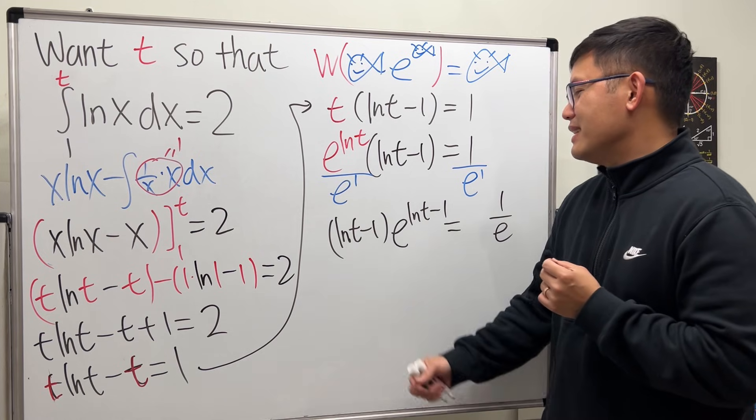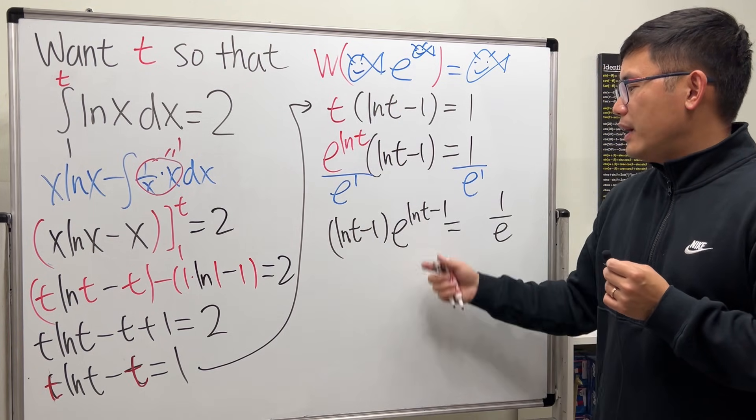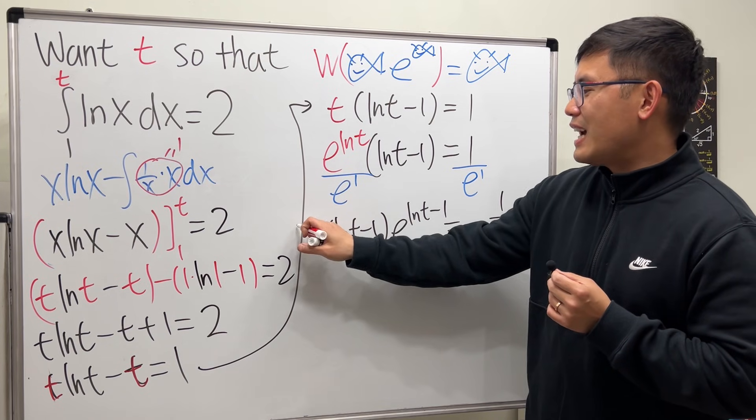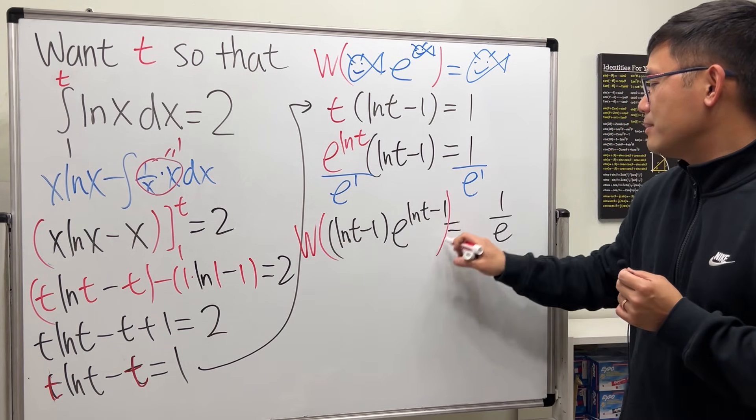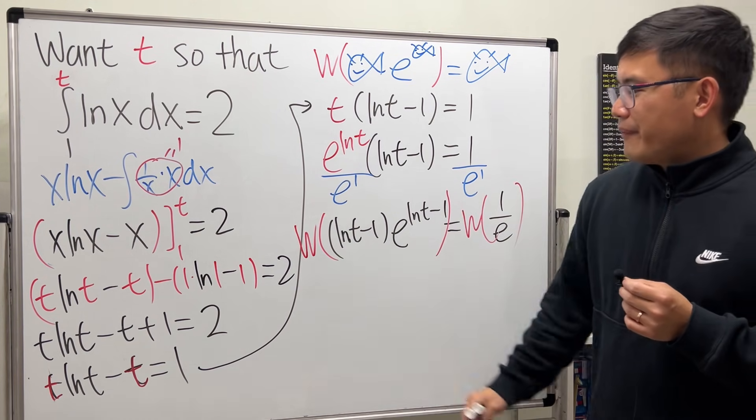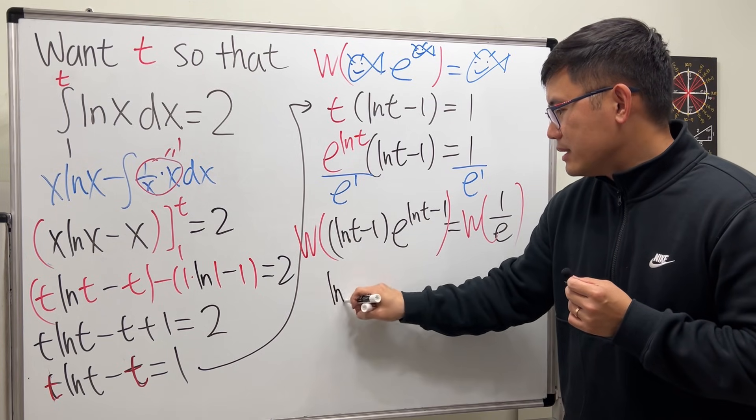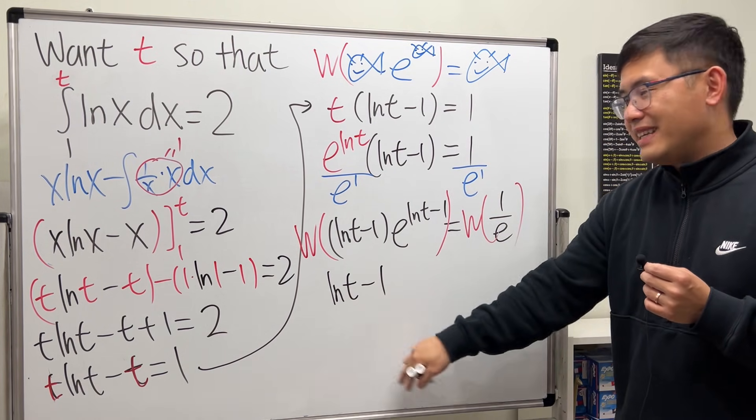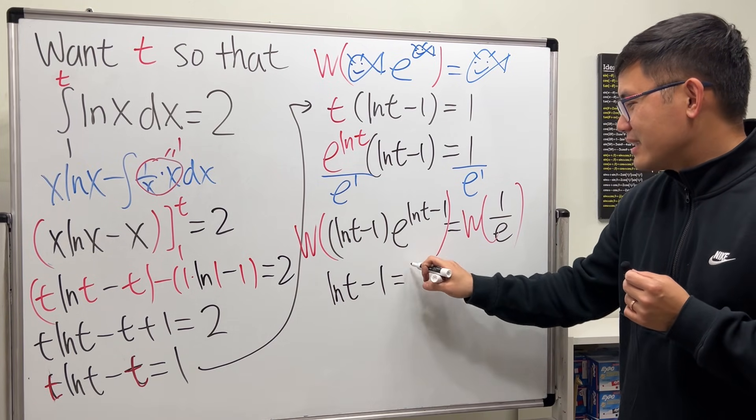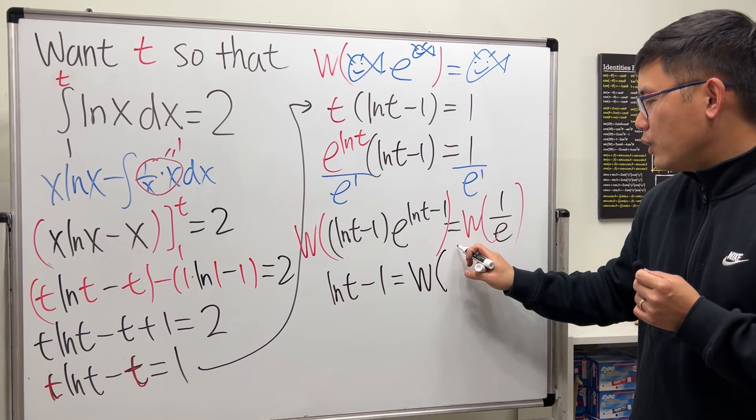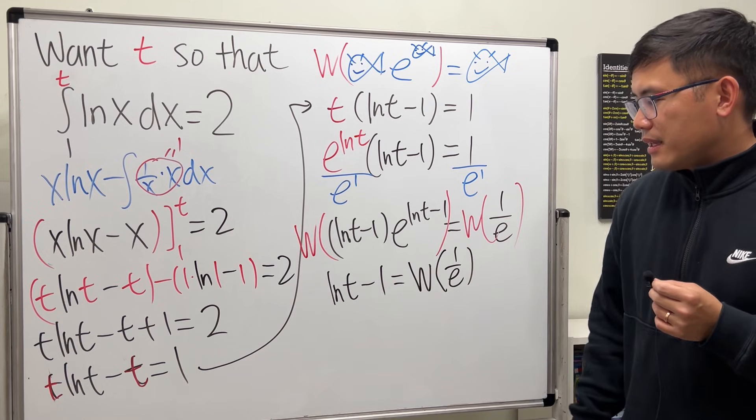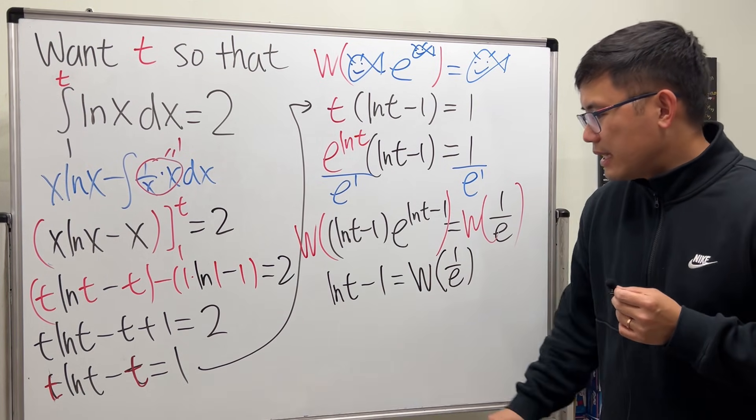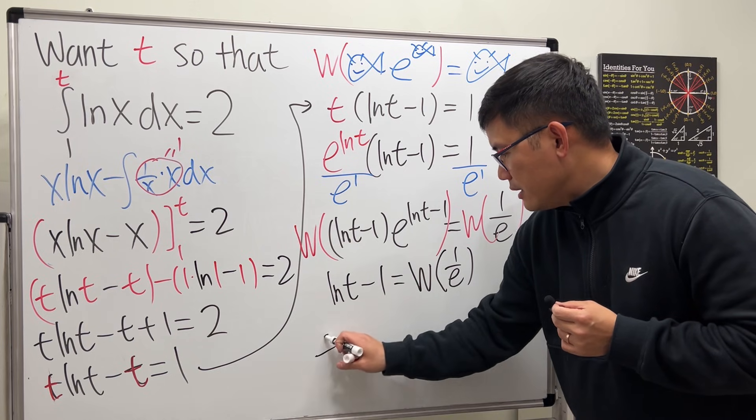So it's time to take the Lambert W function on both sides, and we will just get ln(t) minus 1 right here again. We'll just get the fish back, and on the right-hand side we get the Lambert W function of 1 over e. Now move the 1 to the other side and then exponentiate both sides.